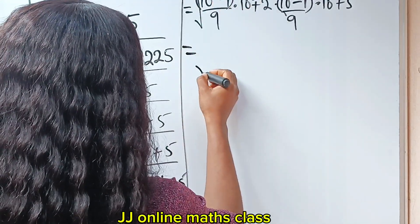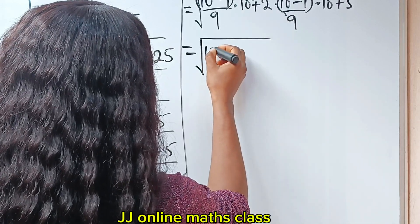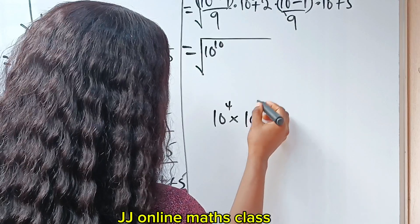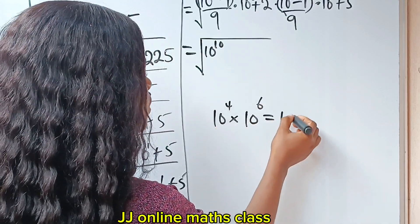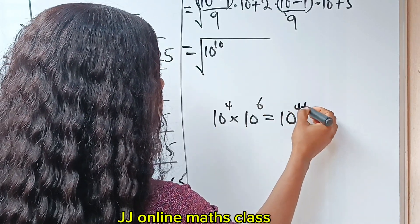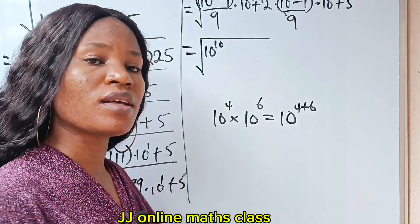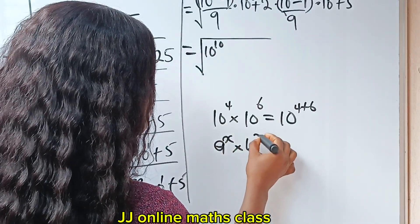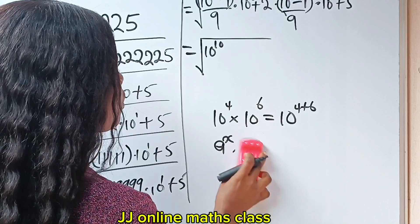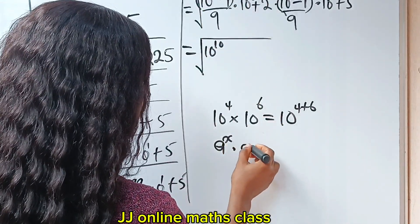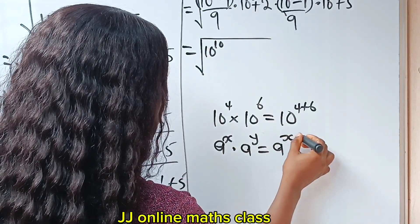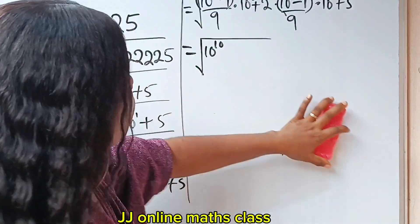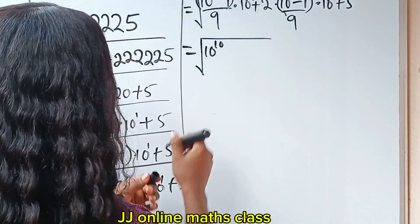Now, 10 to the power of 4 multiplied by 10 to the power of 6 gives us 10 to the power of 10, because when you have the same base you add the powers — according to the law of indices: a to the power of x multiplied by a to the power of y equals a to the power of x plus y.